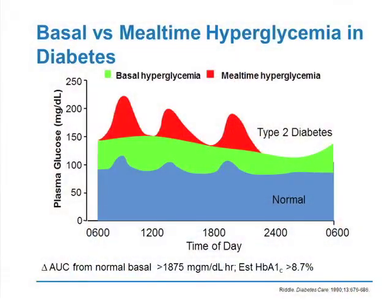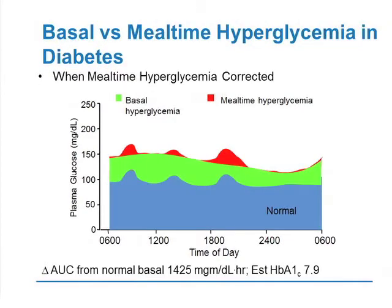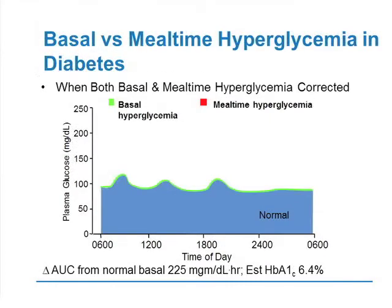In normal individuals, shown in blue, there's a lot of basal and a little prandial insulin. In type 2 diabetes, both basal and prandial are higher, and mealtime glucoses are higher. If you use only basal insulin, you control the basal component but prandial excursions remain high. If you over-basalize, problems arise. If you use only prandial control, you control prandials but can't control overall glucose. To control both, you need to do both.